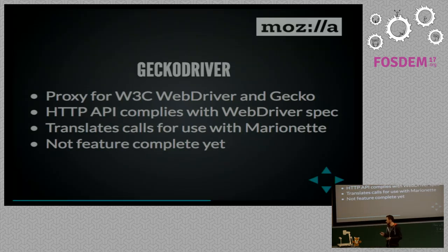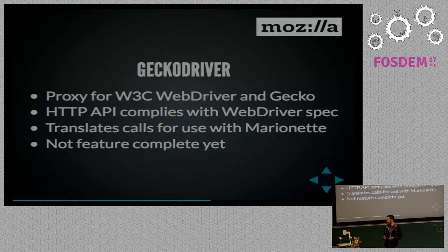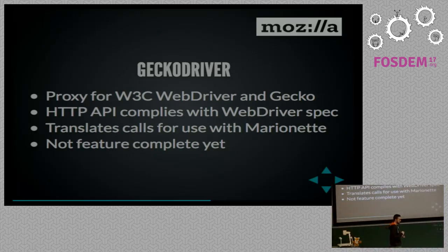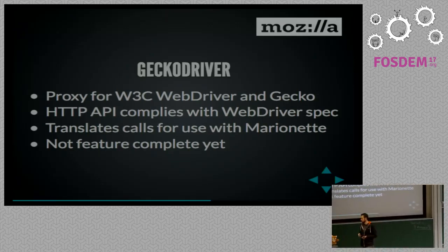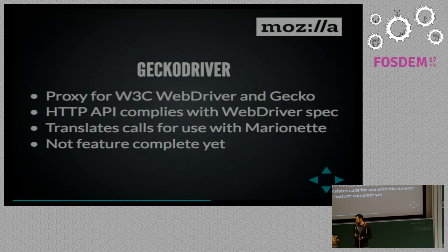GeckoDriver is an HTTP API that complies with the spec, and it translates the calls it receives for use with Marionette. Marionette automates Firefox or any Gecko-based application. GeckoDriver receives the spec-compliant commands and translates them so they can be carried out with Marionette. It's not yet feature-complete, partly because the spec is still in late stages of candidate recommendation with some late-landing changes. Hopefully soon it will be feature-complete, and GeckoDriver may be the first complete implementation of the spec.